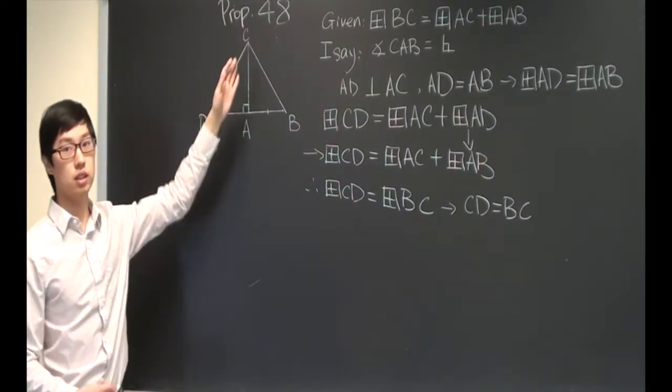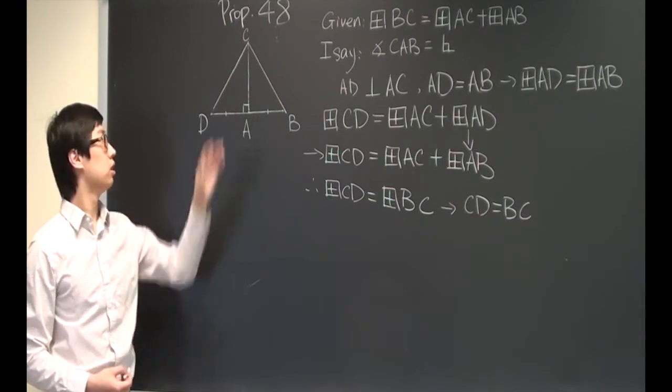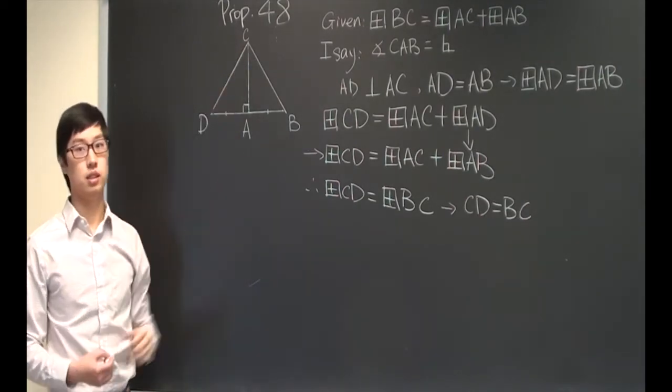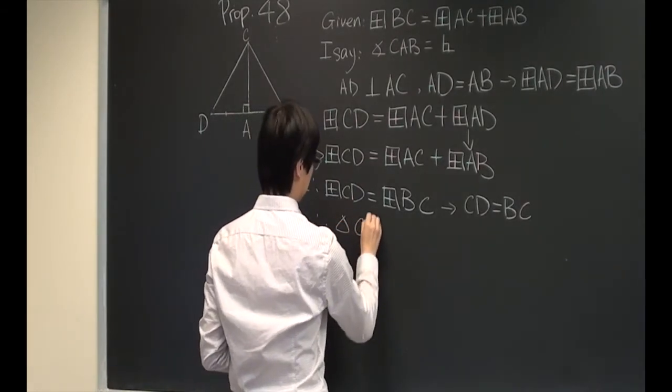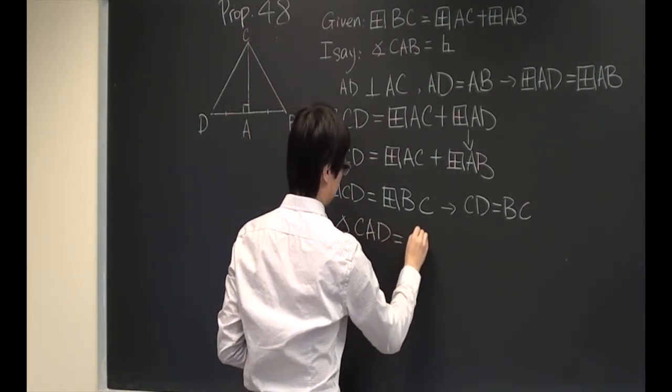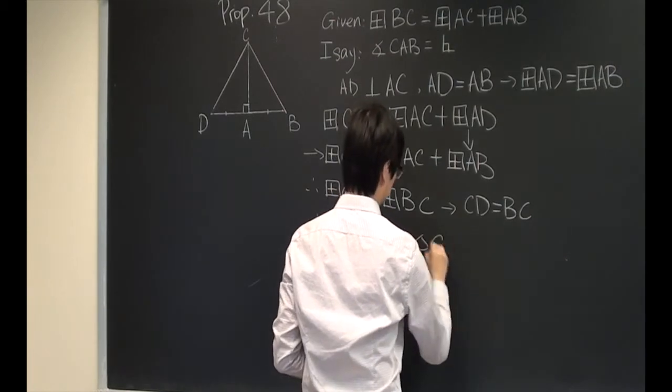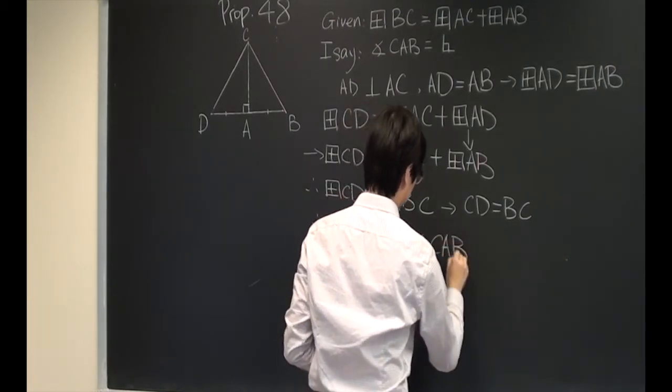Therefore, triangle CAD is equal to triangle CAB by side-side-side.